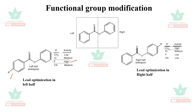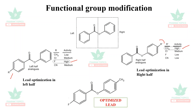For the right-side modification, the R' group is substituted with different groups. When R' is substituted with CH₃, the biological activity is found to be highest. Lead optimization therefore refers to substitution of different functional groups to obtain an optimized lead with the desired activity.